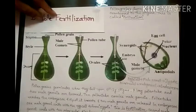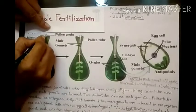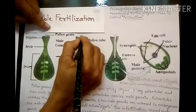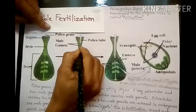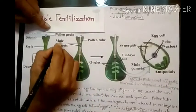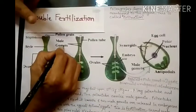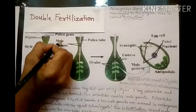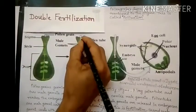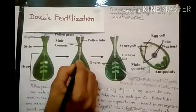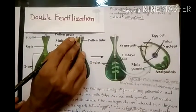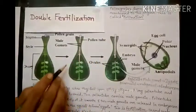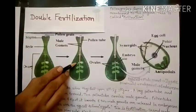When these pollen grains are transferred onto the stigma, they germinate there. When they germinate, a pollen tube is formed, and two male gametes are also formed. Two male gametes are formed from one pollen grain. A long pollen tube forms and carries these male gametes.